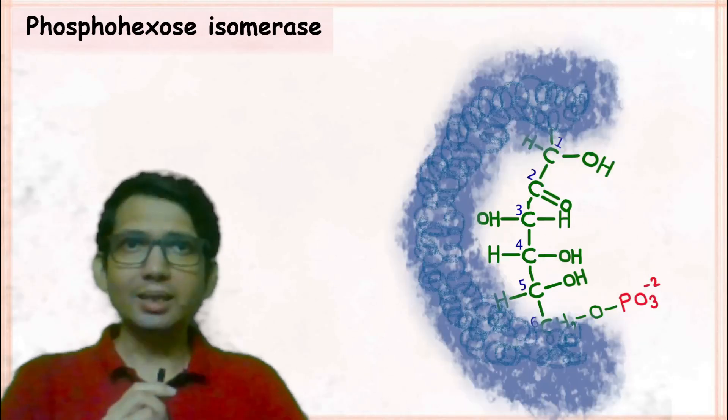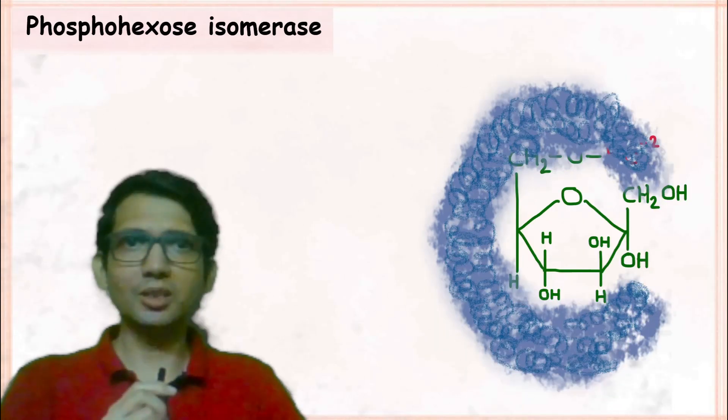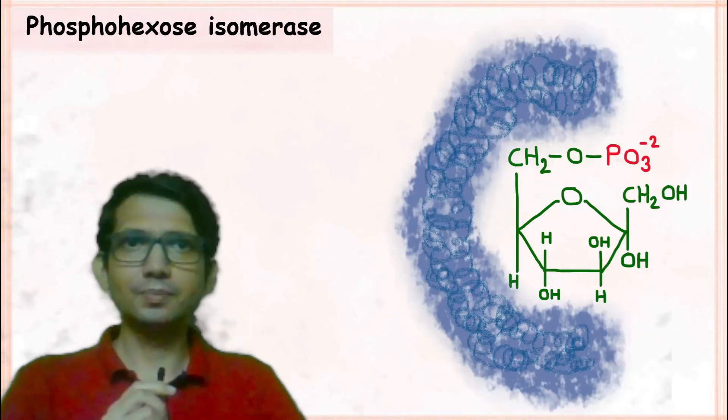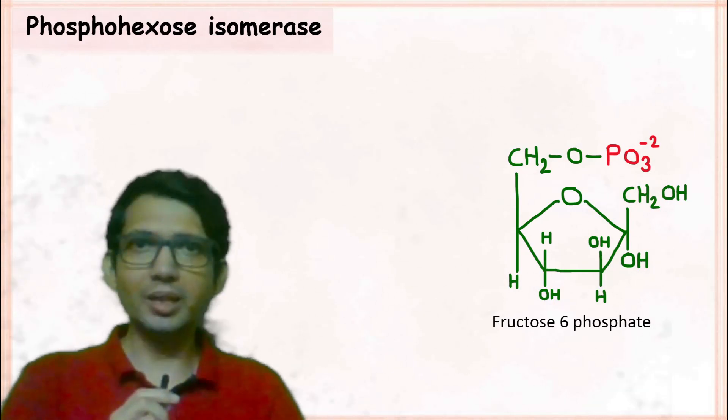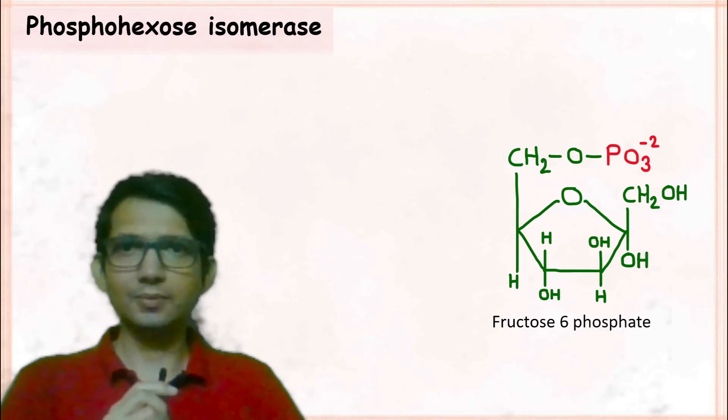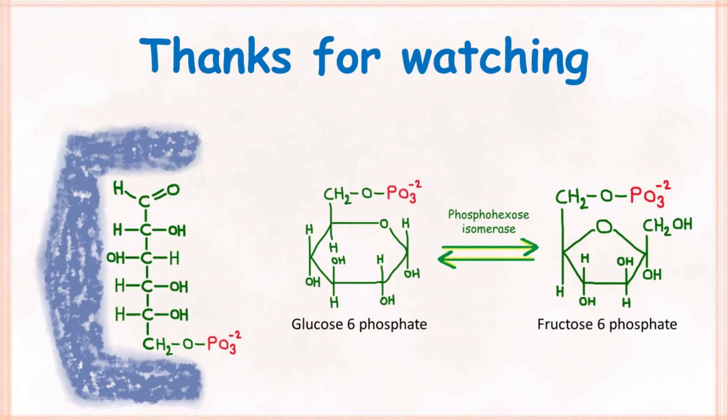In the final step, the enzyme again converts the linear structure into the ring structure. So this is how the enzyme phospho-hexo-isomerase functions.